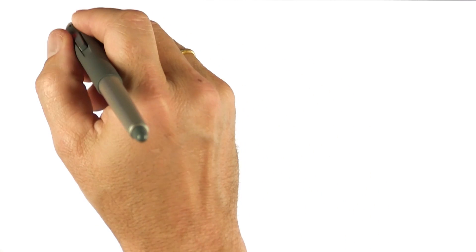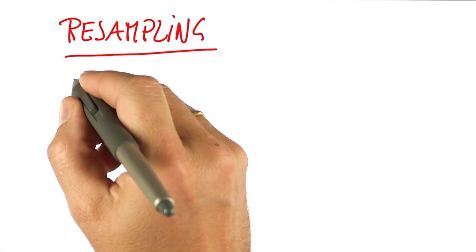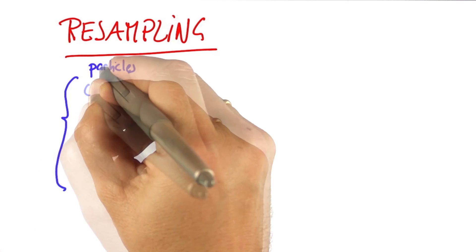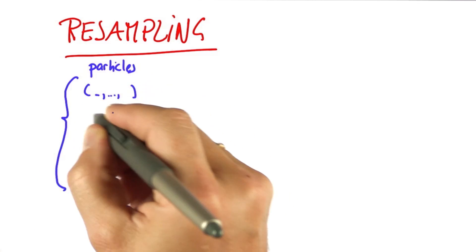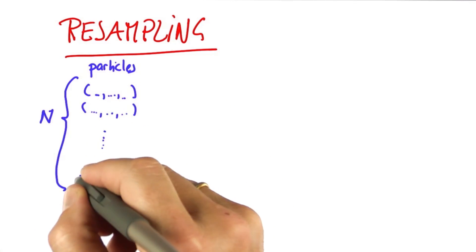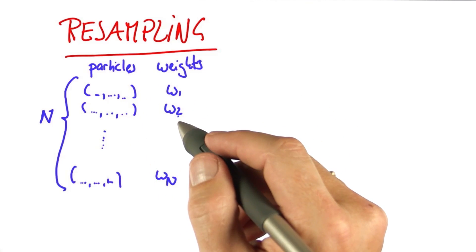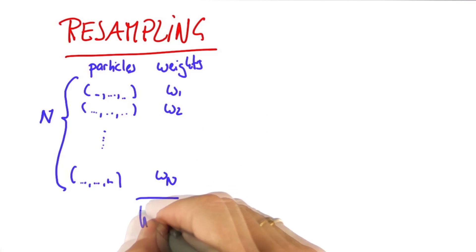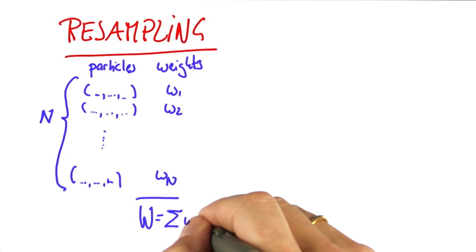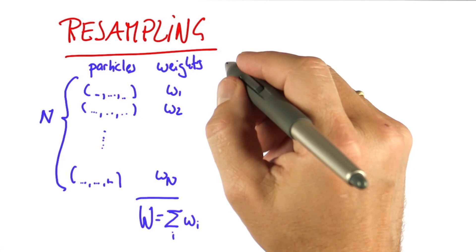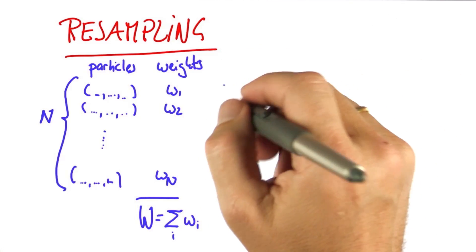But let me be precise what resampling actually means. We are given n particles, each of which has three values, and there's n of them, and they also now have weights. These are simple floats or continuous values. Let's call big W the sum of all these weights, and let's normalize them just for the consideration of what to do.